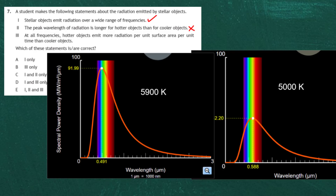Statement 3: at all frequencies, hotter objects emit more radiation per unit surface area per unit time than cooler objects. To find the total radiation emitted per unit surface area, you look at the area under the black body spectrum graph. The area under the 5000 K cooler object graph is a lot less than the area under the 5900 K hotter object graph. So statement 3 is correct.